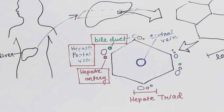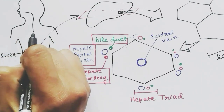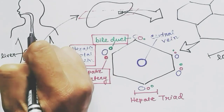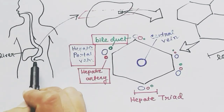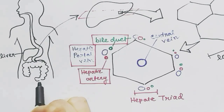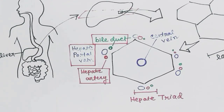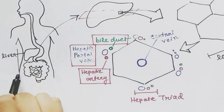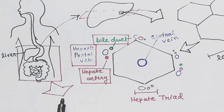Now we will look into what these structures are, starting with the hepatic portal vein. The esophagus, the stomach, and the intestine are present, and if we take these organs and look at them separately: